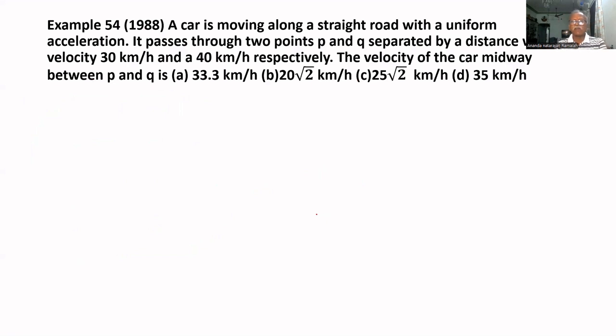A car is moving along a straight road with a uniform acceleration. Uniform acceleration means A is constant. Then only we can apply all these three formulas. It passes through two points P and Q, separated by a distance with a velocity 30 kilometers per hour and 40 kilometers per hour.